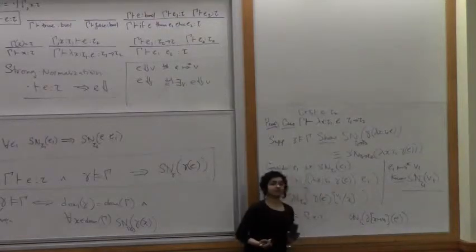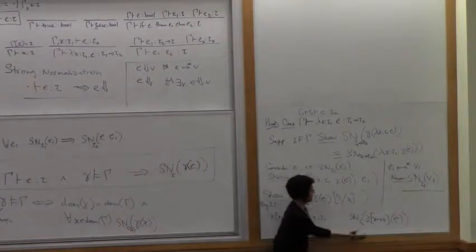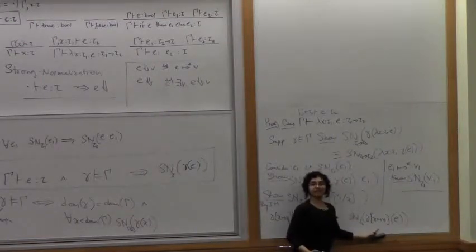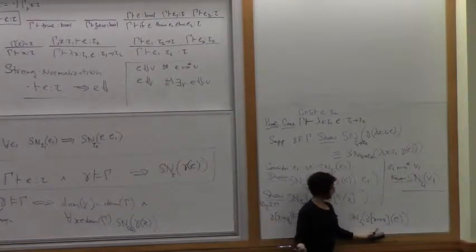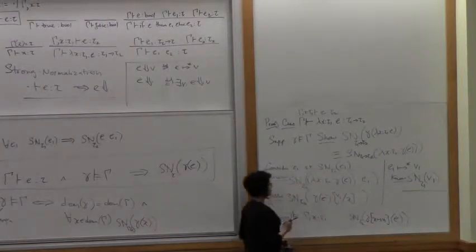Substituted with this stuff is in the set Sn at the type tau 2, right? Okay, let's massage this again because substitution. What is this expression equivalent to? Could we write it in a different way?